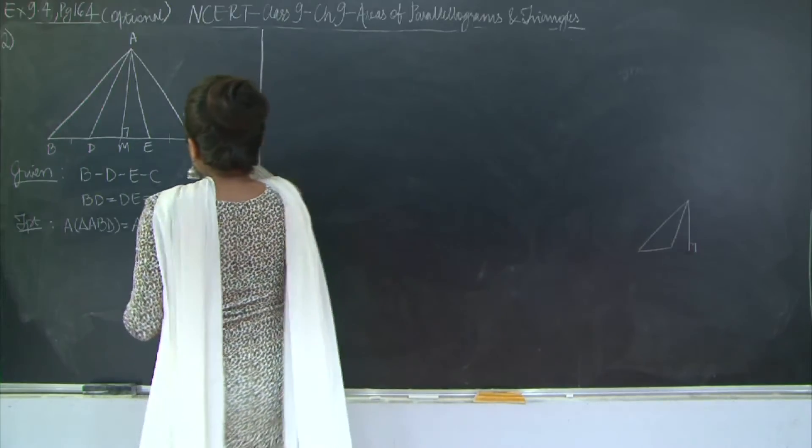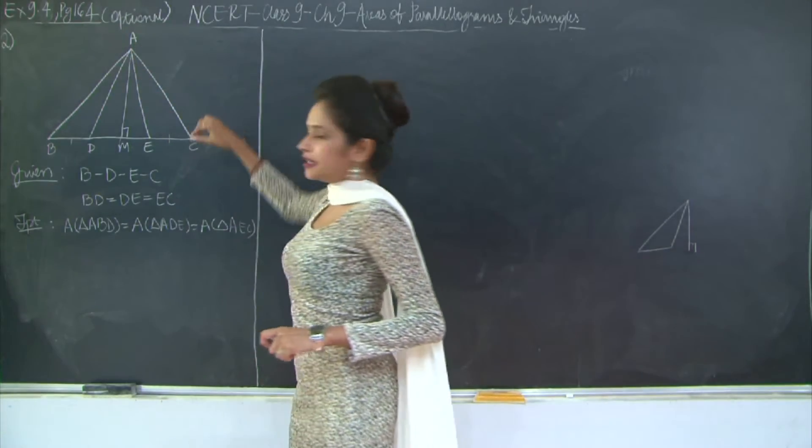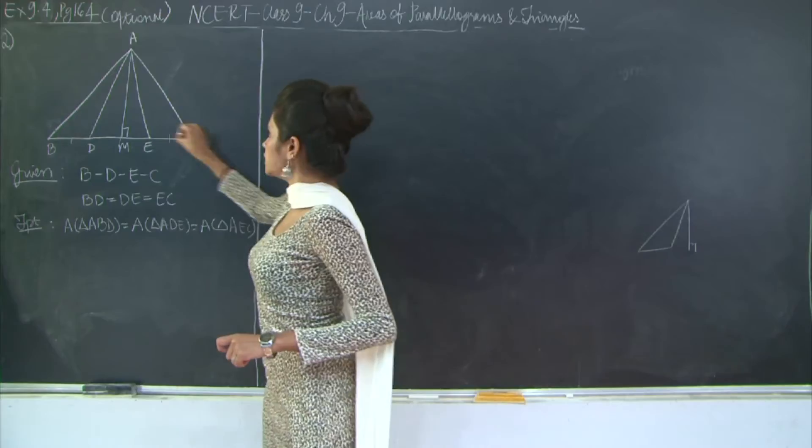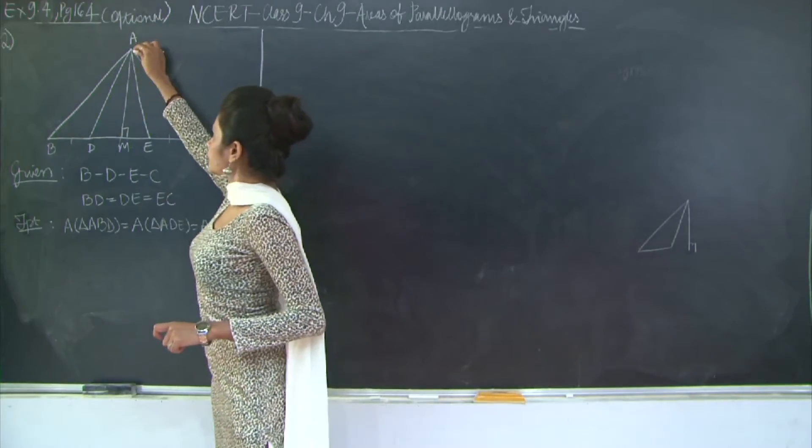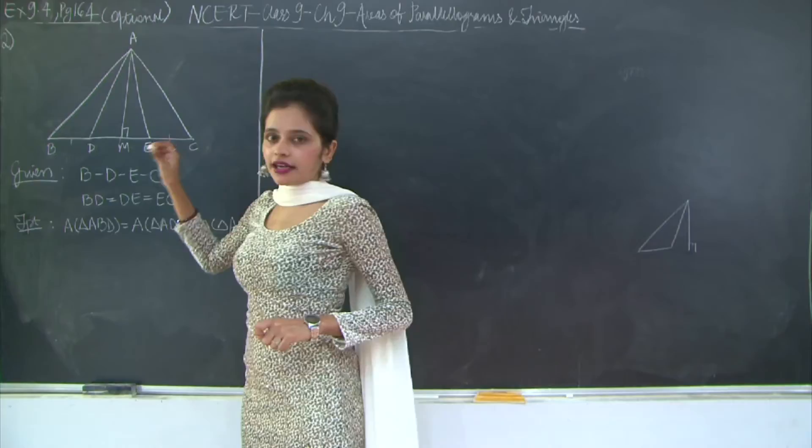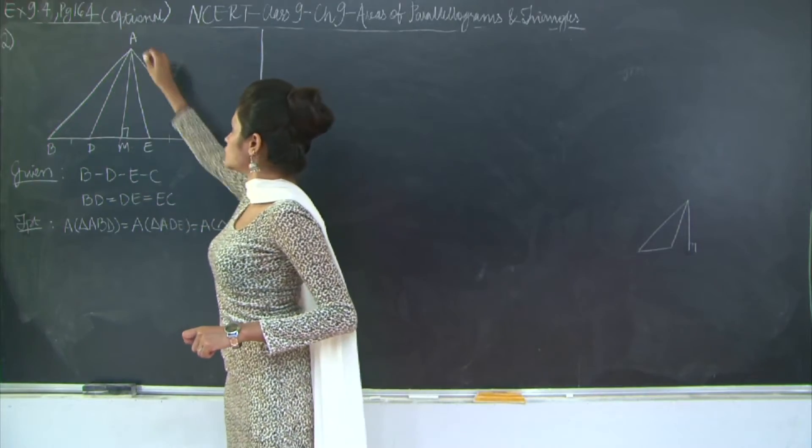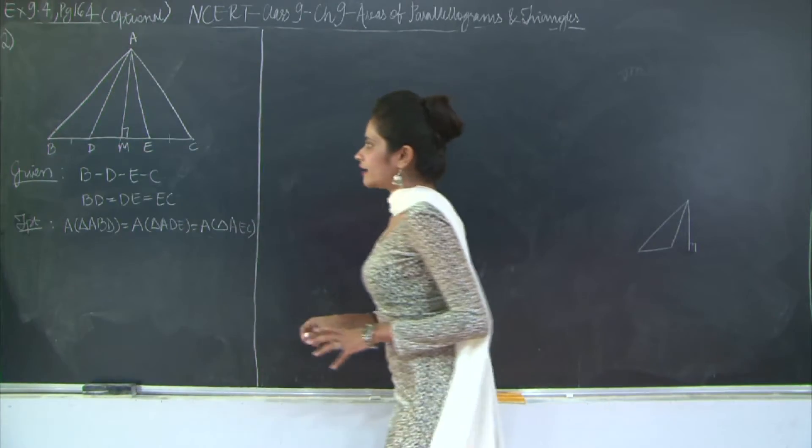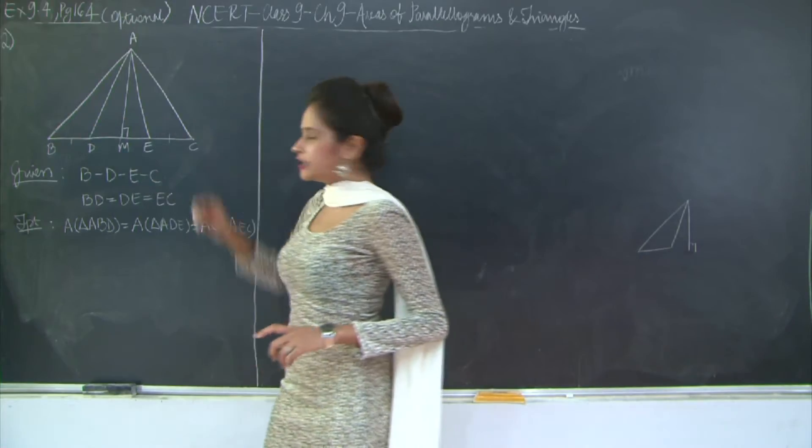Similarly, for triangle AEC the area is half into EC into AM and for area of triangle ADE the area is half into DE into AM. So what do we have? We have BD is equal to DE is equal to EC. This is given.